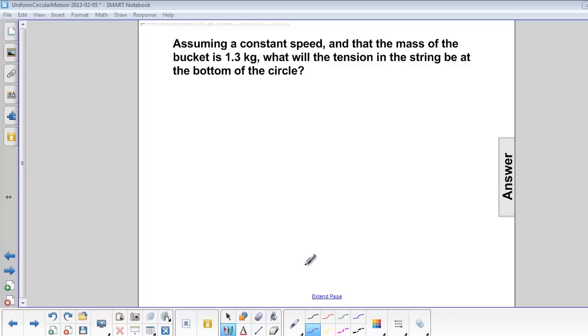From the last question, assuming a constant speed and that the mass of the bucket is 1.3 kilograms, what will the tension in the string be at the bottom of the circle?